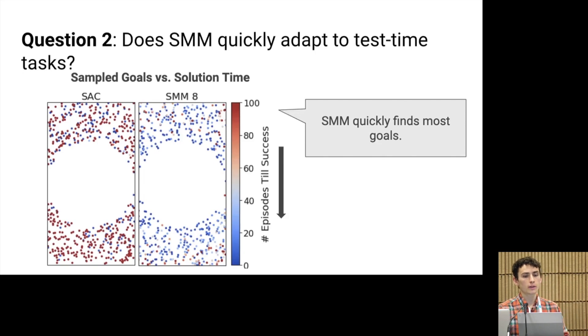To answer this question, we use the manipulation environment. We define the target distribution for the block position to be uniform over the table. And then during training, we do state marginal matching against this target distribution. And we compare against the same baseline as before, soft actor-critic, where the reward function is defined to be density under the target distribution. At test time, we're going to sample a goal location for the block from the table and count the number of episodes until the agent finds this goal location. And one small note is that to avoid trivial solutions where the goal is sampled right next to the block, we ensure that the goals are at least some distance from the block, which explains the circle shown in the center here.